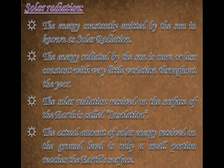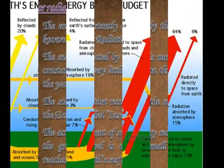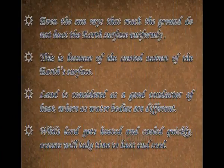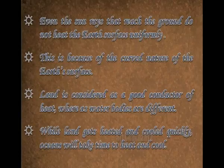The actual amount of solar energy received at ground level is only a very small portion of what the Sun emits — only a fraction reaches the Earth's surface. Even the sun rays that do reach the ground do not heat the Earth's surface uniformly, because of the curved nature of the Earth's surface.